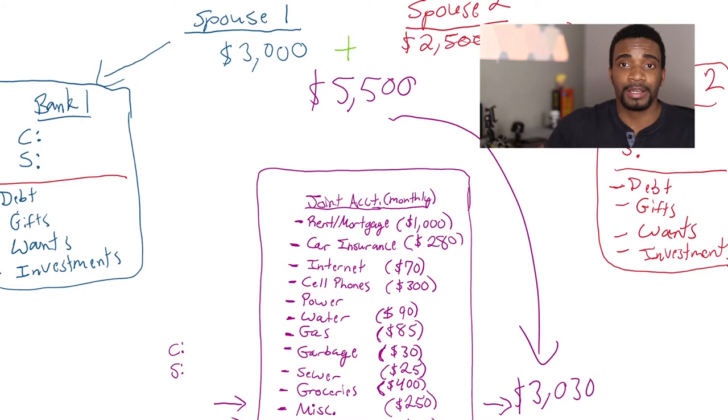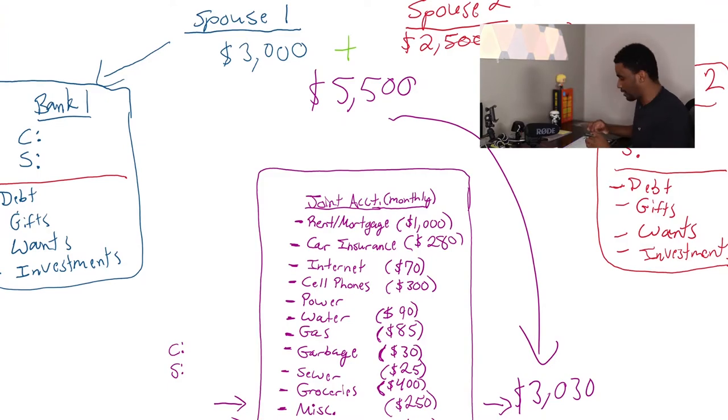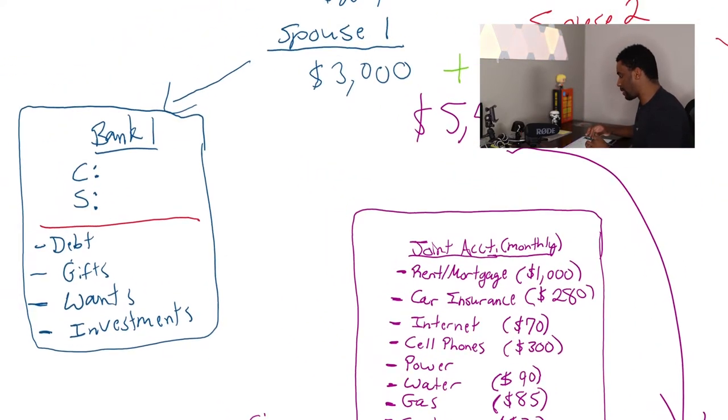That means on date nights, he's the one who holds the card that is their joint account. Now, some of you are probably thinking, why are they doing date nights in their joint account? Shouldn't it just be coming from one or the other's account? Well, I'm about to explain that.